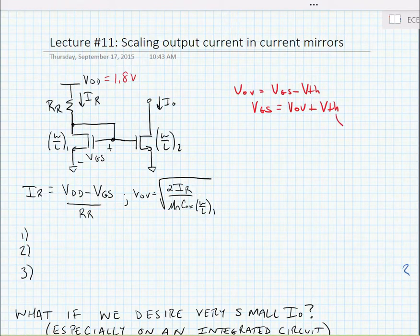Now for our typical MOS devices, our threshold voltages are somewhere around 0.3 to 0.5 volts. So we'll say for the time being that our threshold voltage is 0.4 volts.